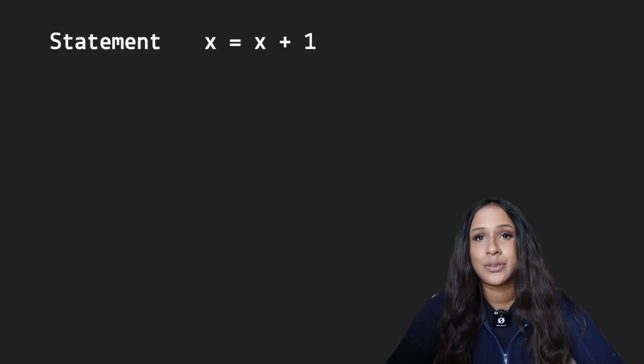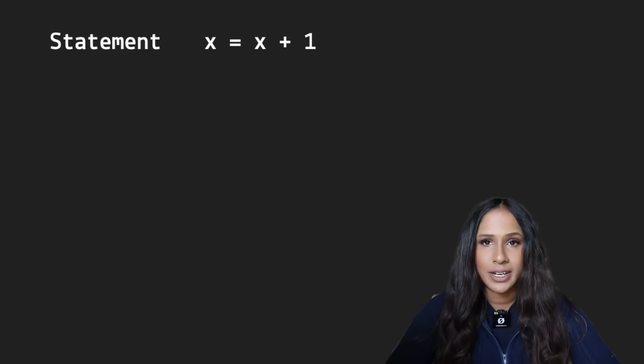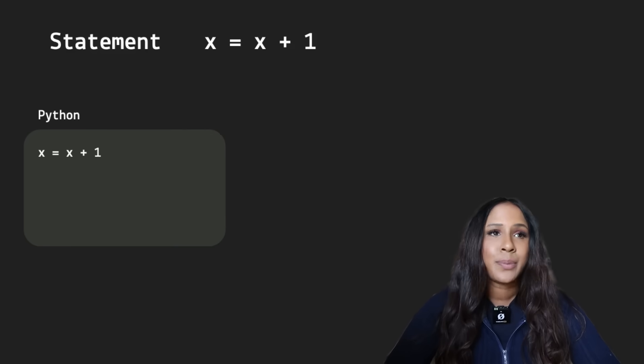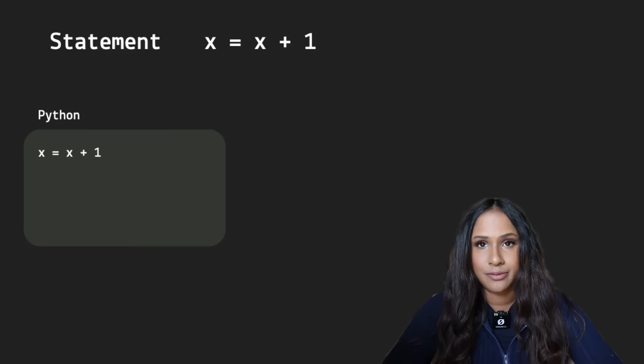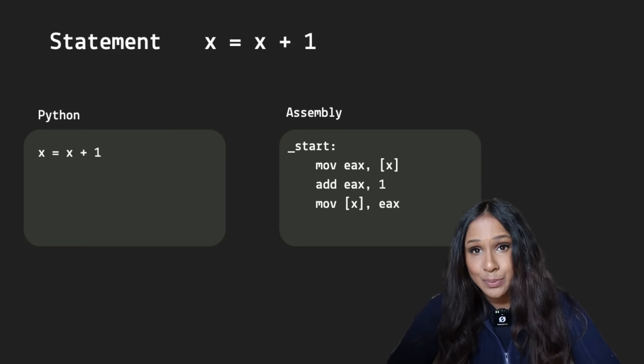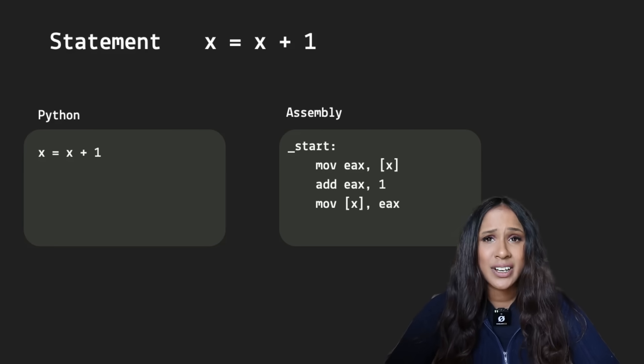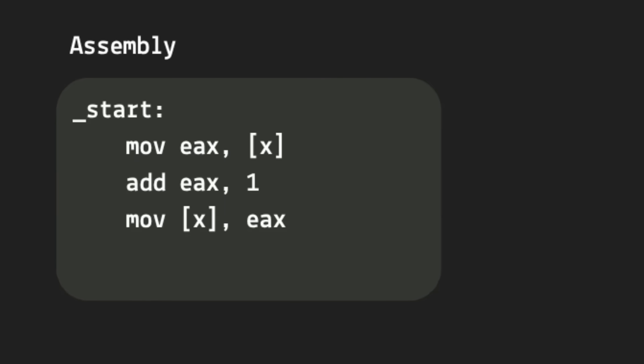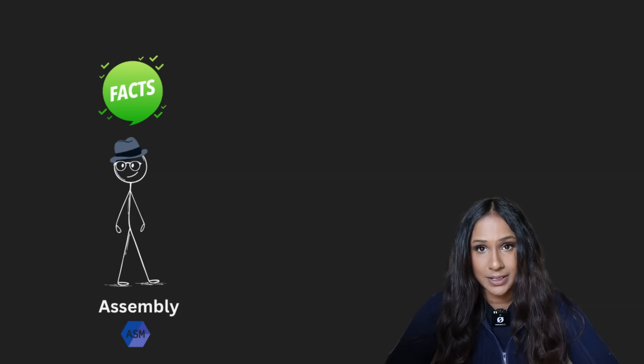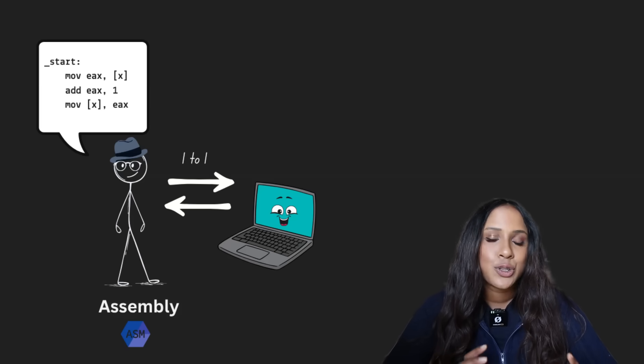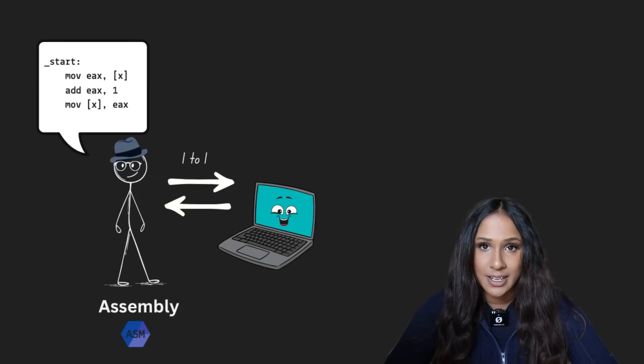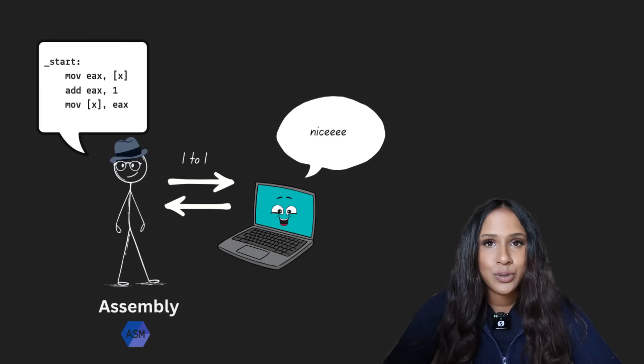Consider the statement, x equals x plus one, where x can be any value. In Python, this would be x equals x plus one. Looks simple enough. But in assembly, that's a bit different. You'd be staring at something like this. However, the nice thing about assembly is that it is the truth of the matter. The commands or statements in assembly map one-to-one to what the computer actually does. Assembly is really as close to talking to the hardware as you can get.